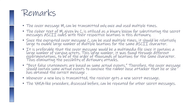The cover message MC can be transmitted only once and used multiple times. The ciphertext of MC, given by CC, is utilized as a bit pool. Since the encrypted cover message CC can be used multiple times, it should be relatively large to enable a large number of multiple locations for the same ASCII character. It is preferable that the cover message be a multimedia file, since it contains a large number of varying octets. Through experimentation, this large number was found to be on the order of thousands of locations for the same character.